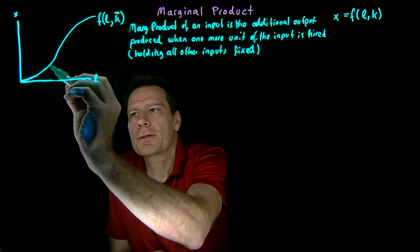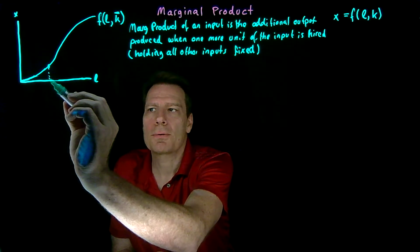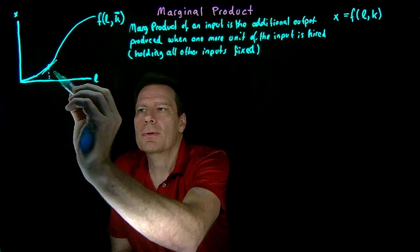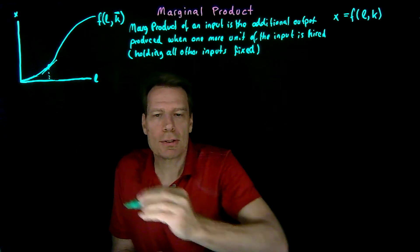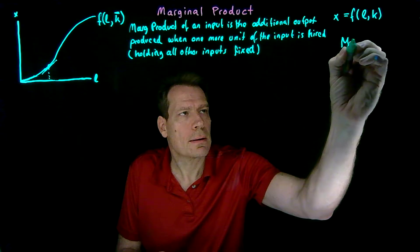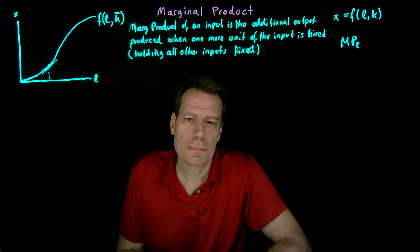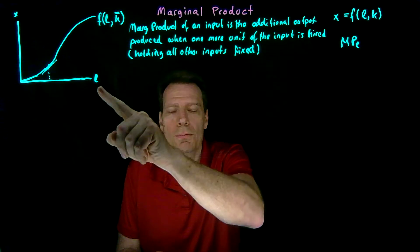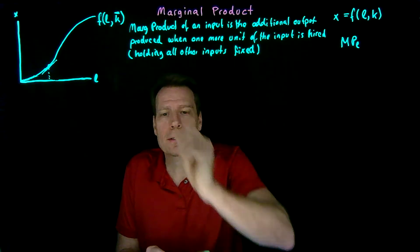Suppose we're at this point of the production function and we ask: how much additional output am I going to produce by hiring one more unit of labor? I would look at the slope of this. The slope tells me, as I go over by one, how much am I going to go up — how much additional output am I going to produce? So the marginal product of labor is equal to the slope of this short-run production function.